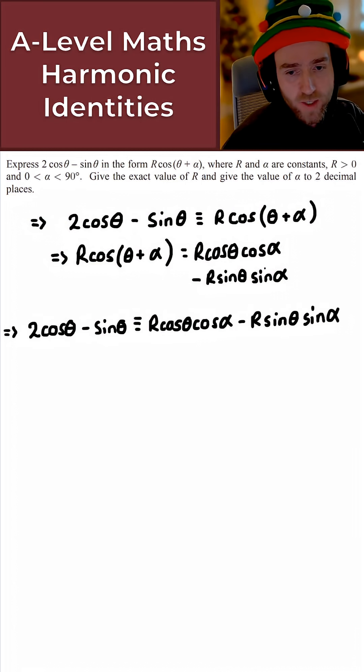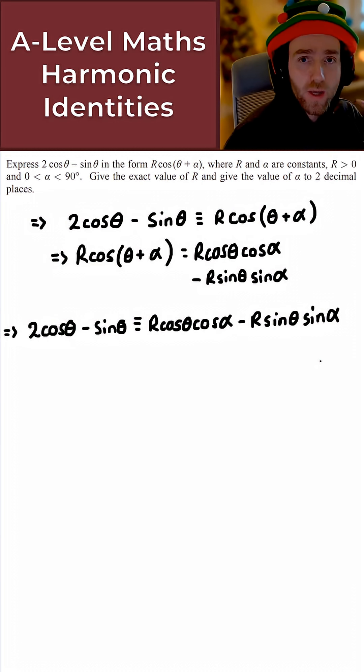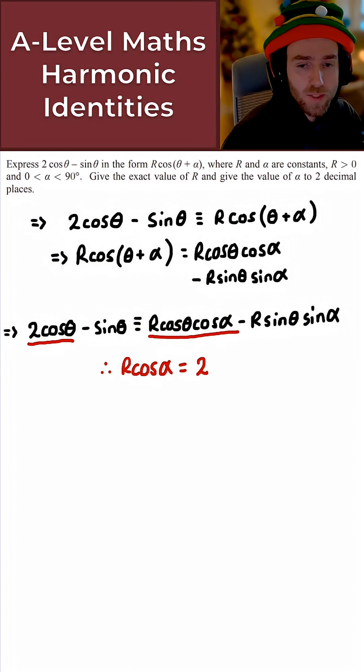And putting these equal to each other then, we obtain the following here. Now what I want to do at this point here is just to equate coefficients. So if we do that then, what we'll get here is the following. So what I get then is R cos alpha is equal to 2.